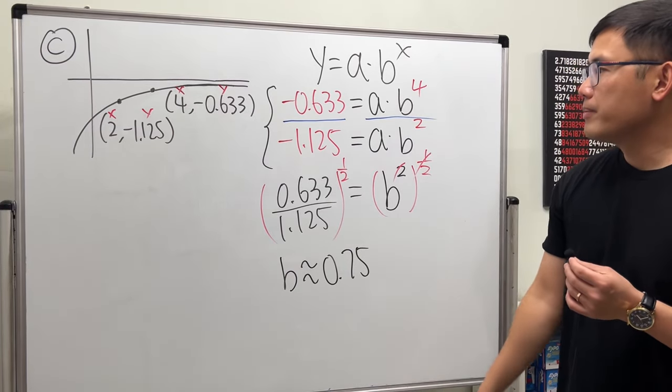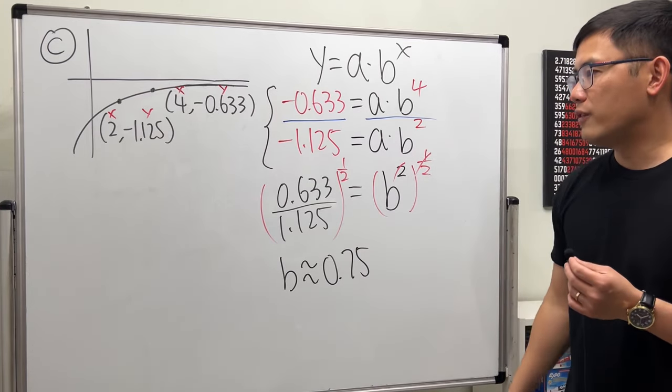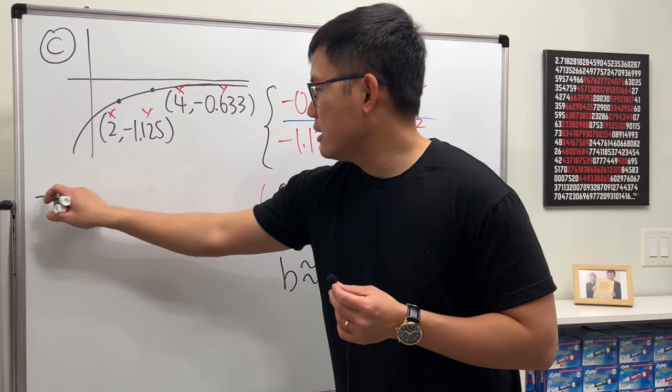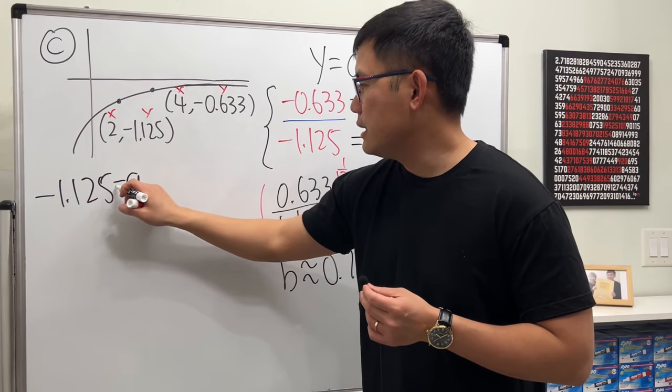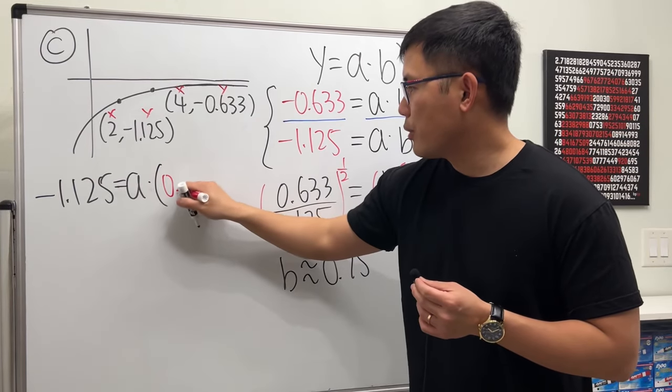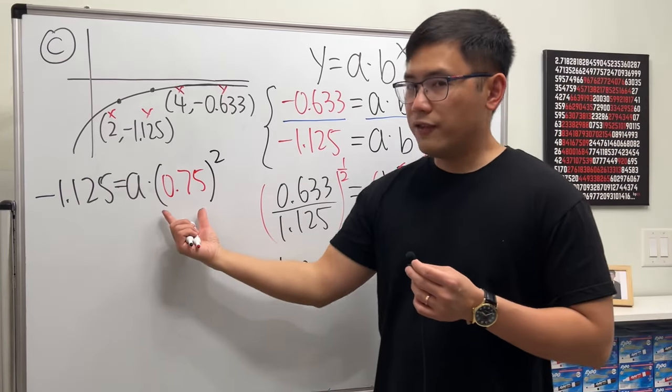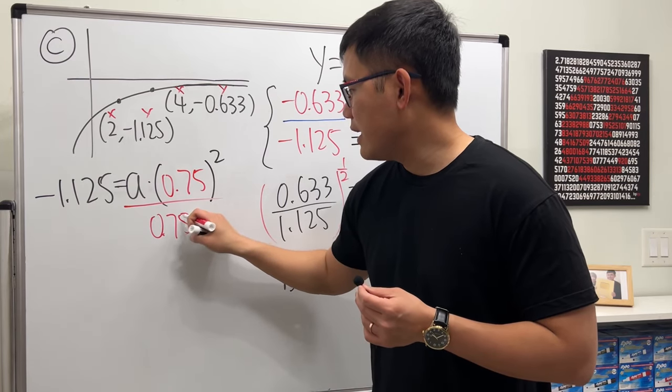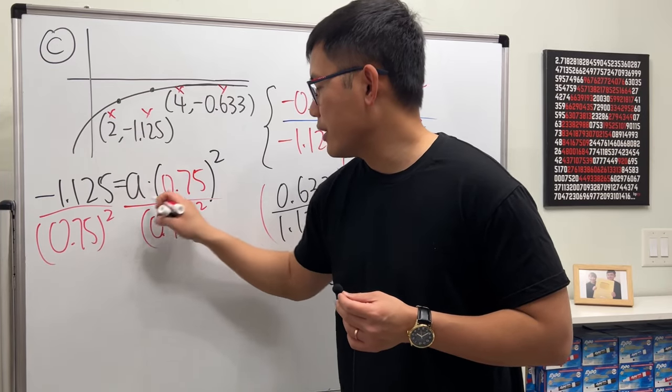All right, now we know b, we can just go ahead and plug in b value into one of these equations, up to you whichever one that you want to do. I'm going to plug into this one right here. So, we have negative 1.125 equals a times b, which is 0.75, and then we will have to square that. I'm just going to divide this on both sides.